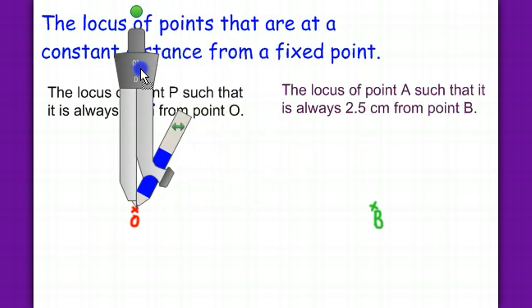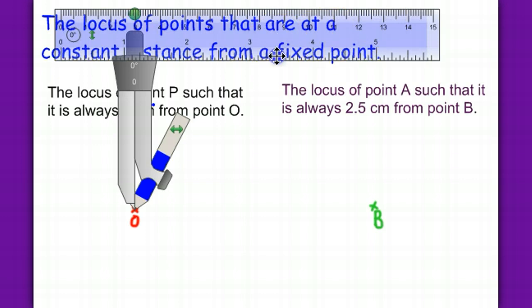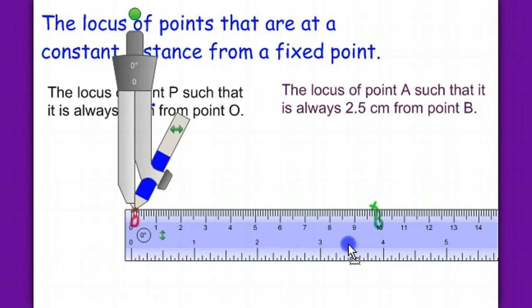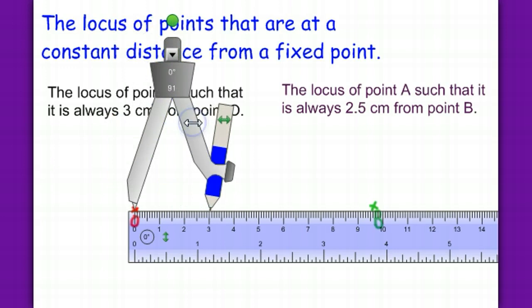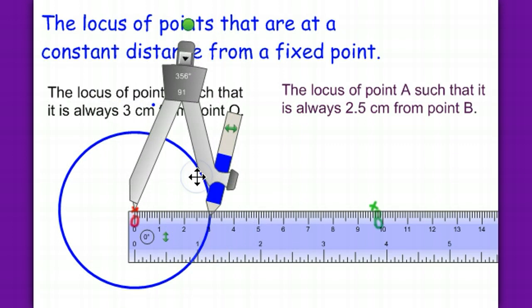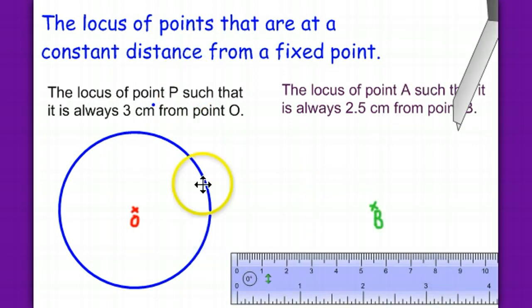So, at O, just put a compass there and you need a ruler to measure 3 cm. Open 3 and draw the locus. So, the blue line here is locus.